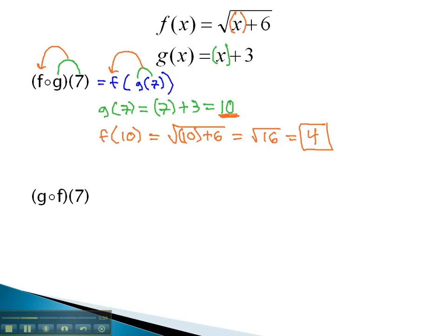Let's take a look at doing the same type of problem, but this time switch the order of the g and the f. This means we do g with the f function inside of it. In other words, we're gonna plug 7 first into the f function. f(7) equals the square root of 7 plus 6, which is the square root of 13. That can't be simplified.